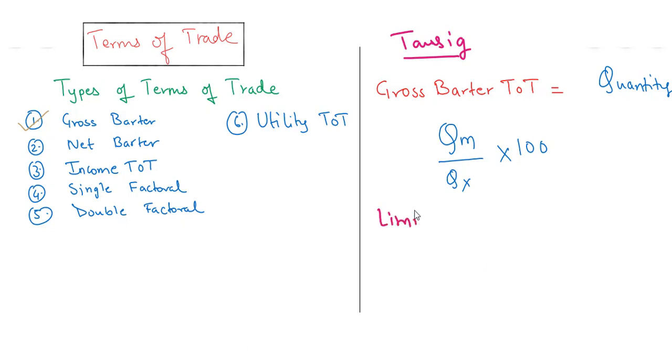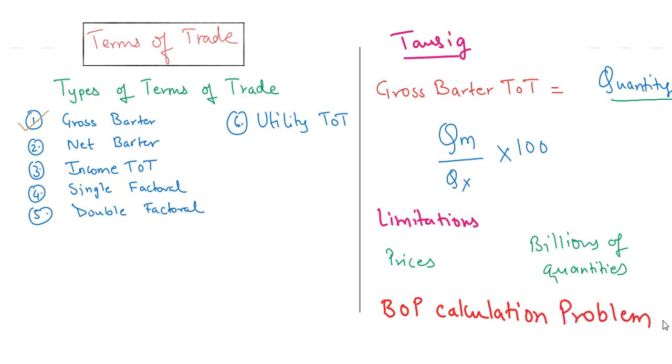There are certain limitations to calculate terms of trade by this method. One of the biggest criticisms that Taussig's concept faced was that the ratios are given in terms of quantities and not prices. For practical purposes, when billions of quantities are imported and exported, it would not be possible to calculate terms of trade in this manner. Secondly, while calculating the balance of payments, one would not be able to record the transaction in terms of quantities. However, we have one more index that gets rid of this limitation.